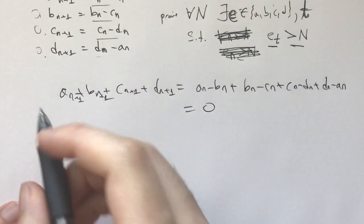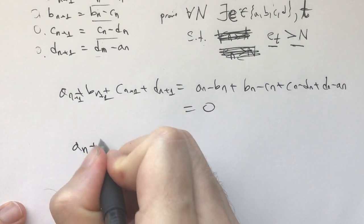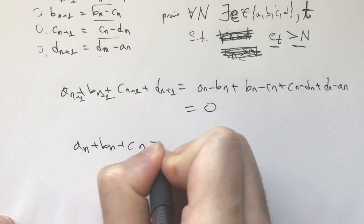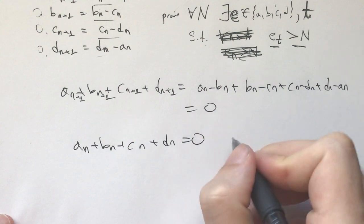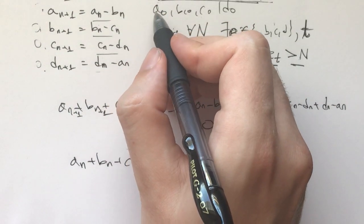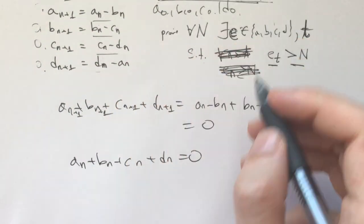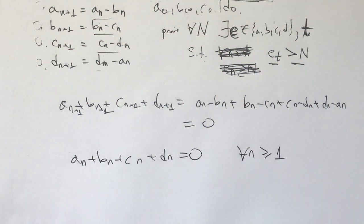So, this means that the sum An plus Bn plus Cn plus Dn is equal to 0 for, if we call the initial ones a0, b0, c0, d0, for all N greater than or equal to 1.